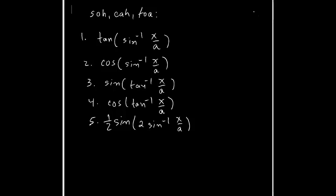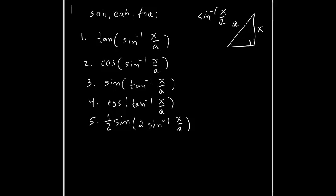The idea is just the basic SOH-CAH-TOA. If you take a right triangle and you have sine inverse x over a, then x is the opposite side and a is the hypotenuse. Using the Pythagorean theorem, you can easily find the adjacent leg, which is √(a² - x²).